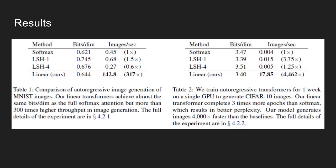The table shows the performance of autoregressive transformer models on image generation task. On MNIST dataset, proposed linear transformers achieve similar performance to the full softmax attention version, but with more than 300 times speed gain. Also, on CIFAR-10 dataset, the model generates images 4000 times faster than the baseline softmax model.